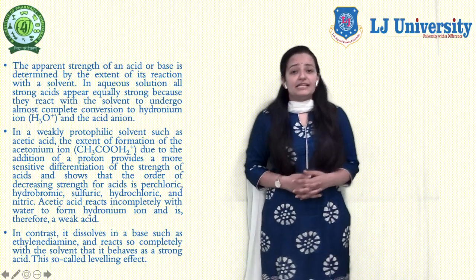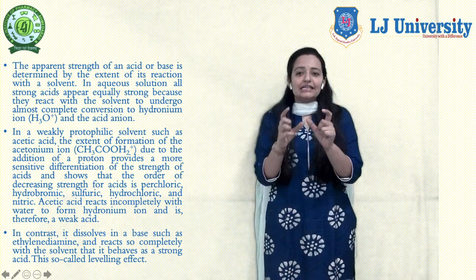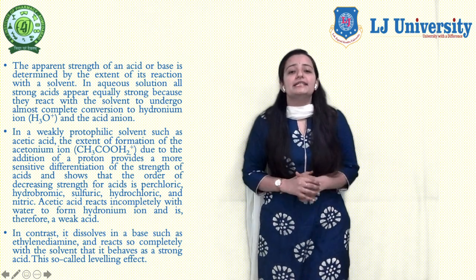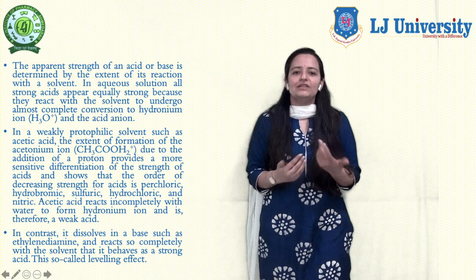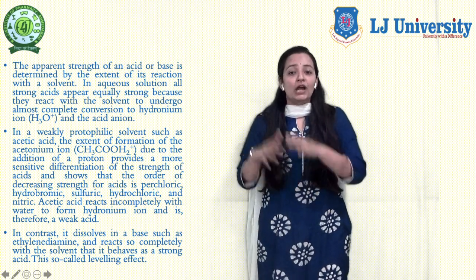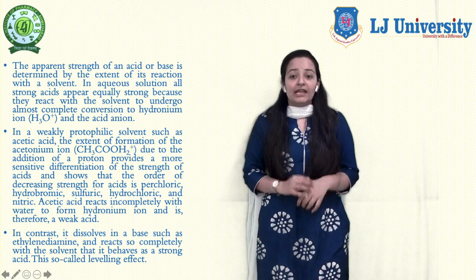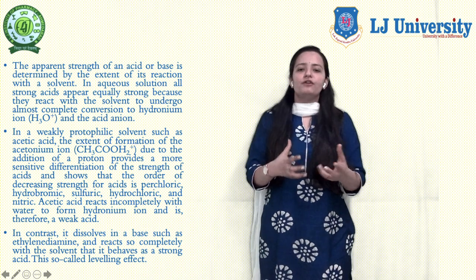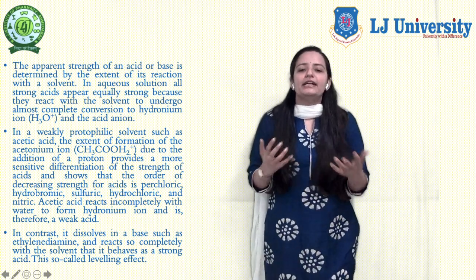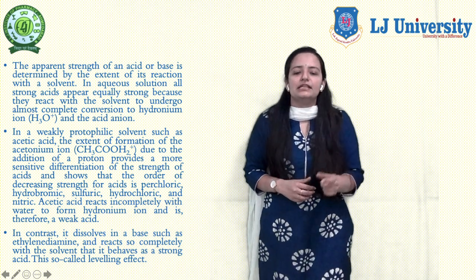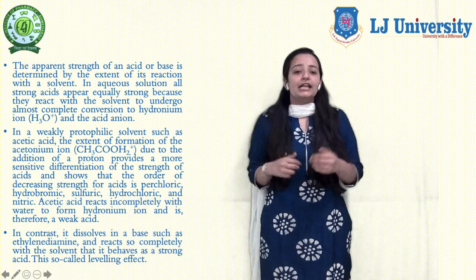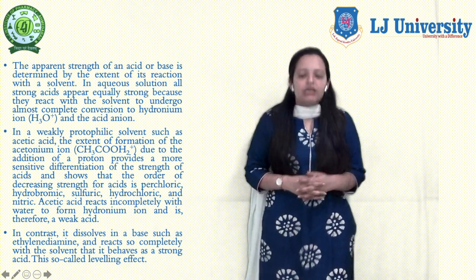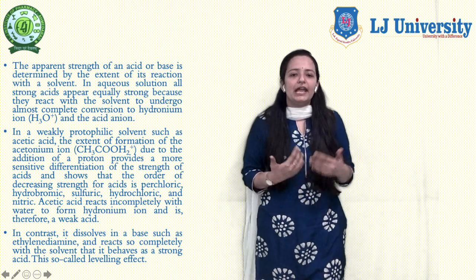The apparent strength of an acid or base is determined by the extent of its reaction with the solvent. In aqueous solutions, all strong acids appear equally strong because they react with the solvent to undergo almost complete conversion to hydronium ion and the acid anion. In weakly protophilic solvents such as acetic acid, the extent of formation of the acetanium ion due to the addition of a proton provides a more sensitive differentiation of the strength of acids, showing that the order of decreasing acid strength is perchloric, hydrobromic, sulfuric, hydrochloric, and nitric.